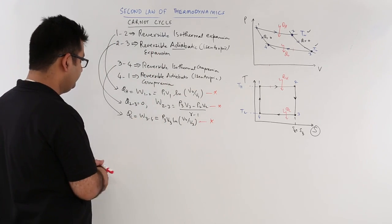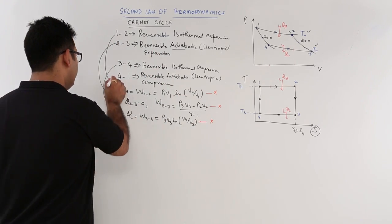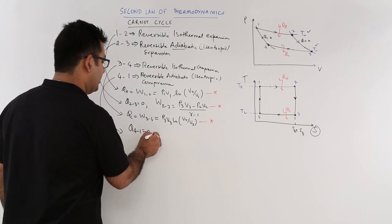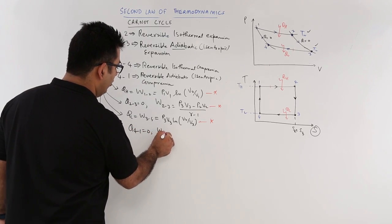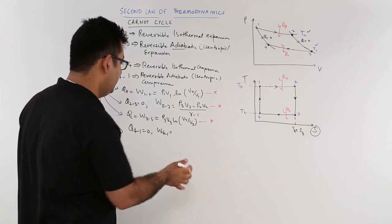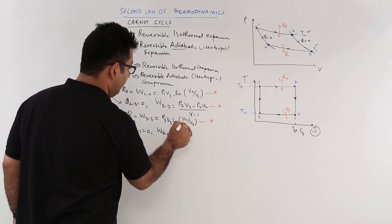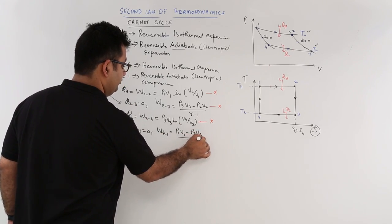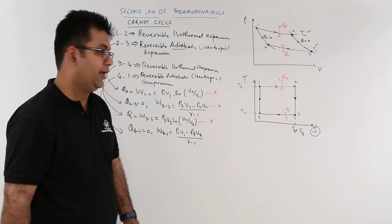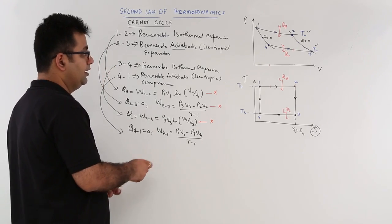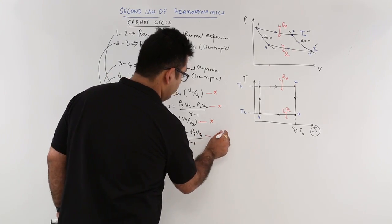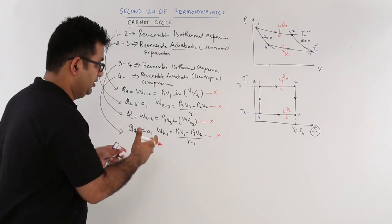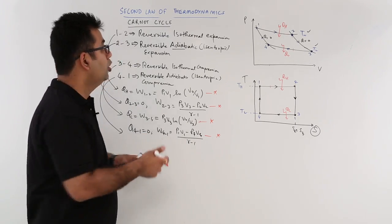Now we come to 4, 1. So for 4, 1, you have heat as 0. There is no heat interaction. And W4,1, which is again an adiabatic process, this becomes P1 V1 minus P4 V4 by gamma minus 1. So these are the mathematical relations for the work and the heat values. Now let's derive an expression for the efficiency of the Carnot cycle.